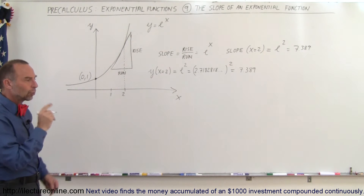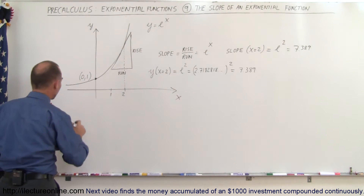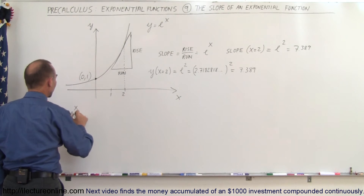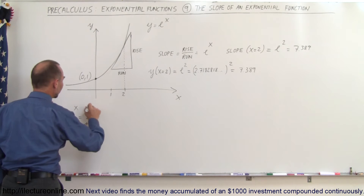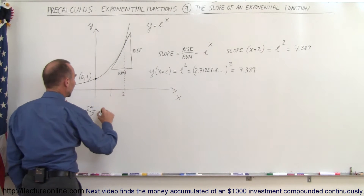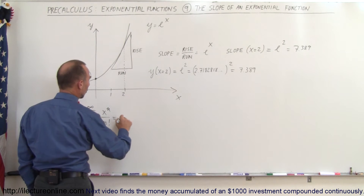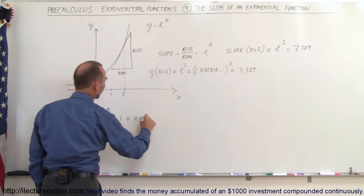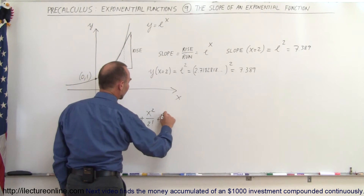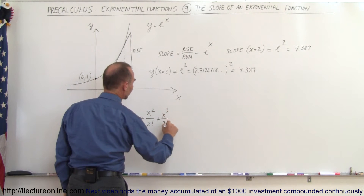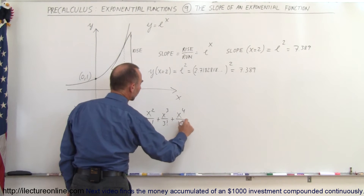Now remember the infinite series that defines the exponential function. We can say that e to the x can be written as the sum from n equals 0 to infinity of x to the n divided by n factorial, which equals 1 plus x plus x squared divided by 2 factorial plus x cubed divided by 3 factorial plus x to the fourth divided by 4 factorial, and so forth.